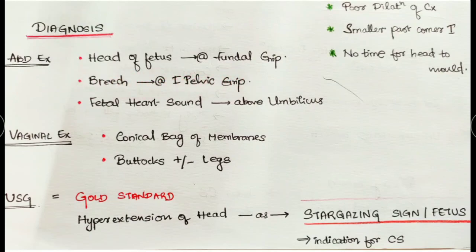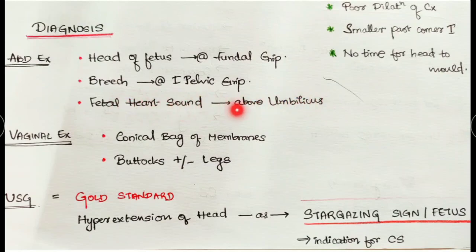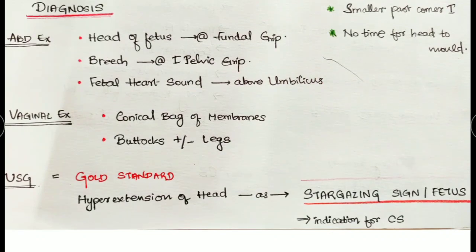In vertex presentation, the baby's heart lies downward, so fetal heart sounds are heard below the umbilicus. In breech presentation, it is the opposite — the fetal heart sound is heard above the umbilicus. These findings are sufficient to confirm a breech presentation on abdominal examination.